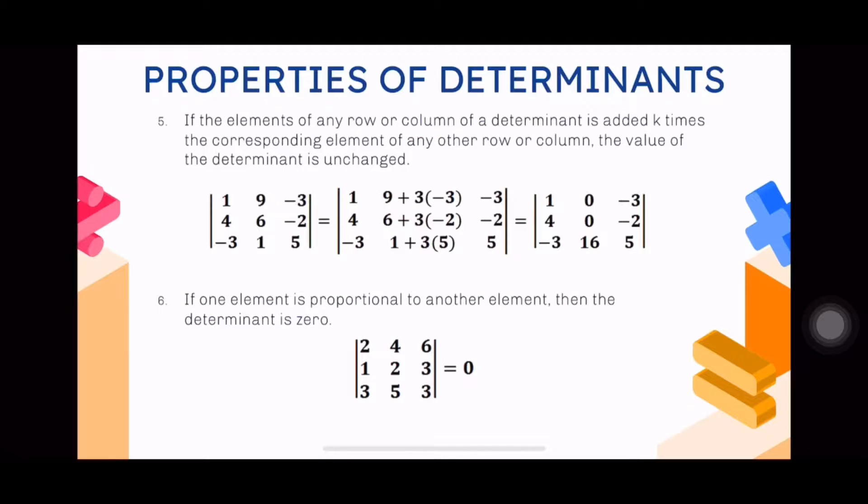Next property, number five: if the elements of any row or column of a determinant is added k times the corresponding element of any other row or column, the value of the determinant is unchanged. This is not easily obvious for us to identify that this kind of property will exist in the matrix given to us.